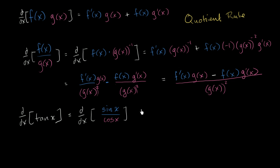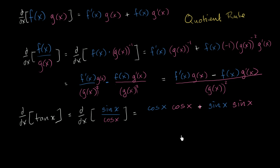So now we can just apply the quotient rule. All of this business is going to be equal to the derivative of sine of x times cosine of x. What's the derivative of sine of x? Well, that's just cosine of x. It's the derivative of sine of x times whatever function we had in the numerator, sine of x times the derivative of whatever we have in the denominator. What's the derivative of cosine of x? The derivative of cosine of x is negative sine of x. So I'll put sine of x here, and it's a negative, so I can make this a positive. And then all of that over cosine of x squared.